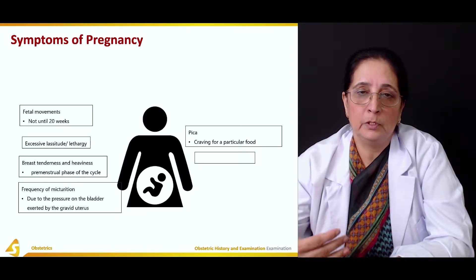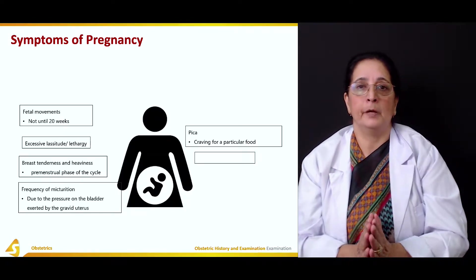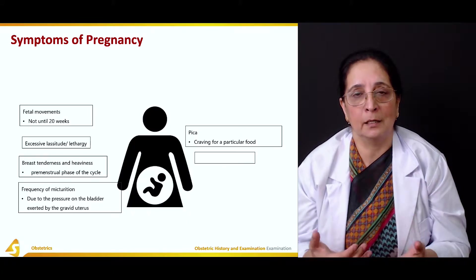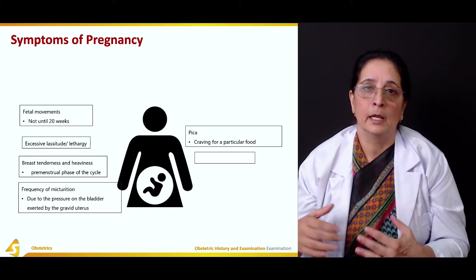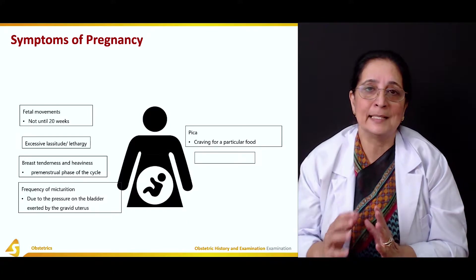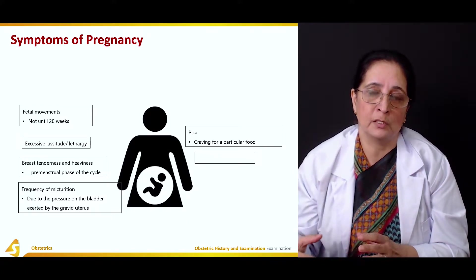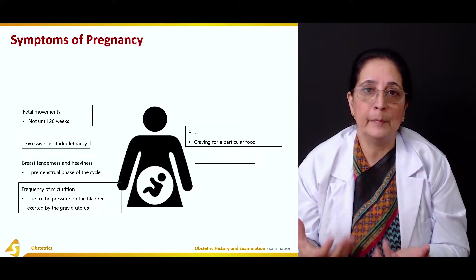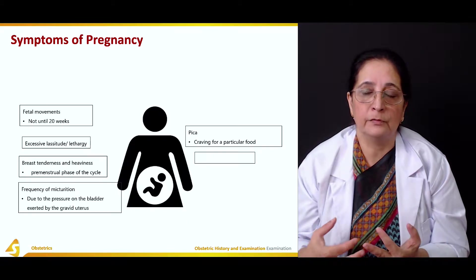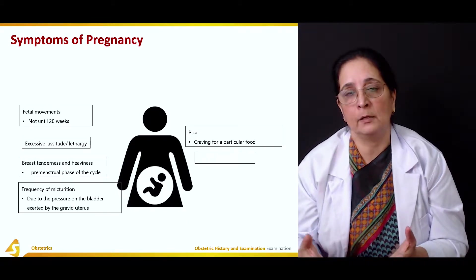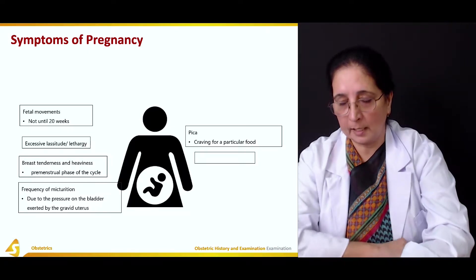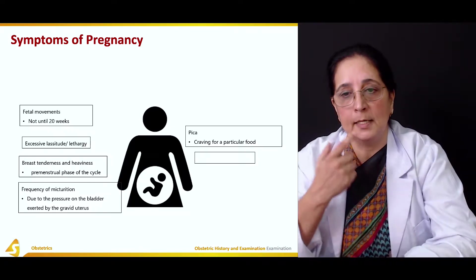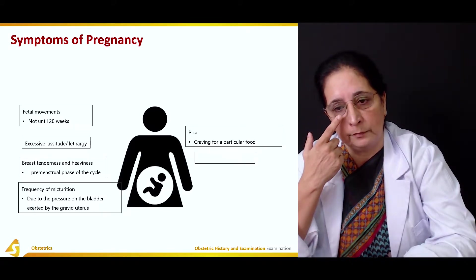With pica, pregnant women usually like to eat sour or spicy foods. They can also have a dislike for certain foods — when they smell those foods they feel nauseated and may vomit. So pica is a craving for particular food types.